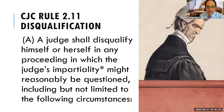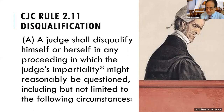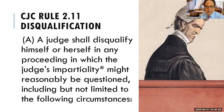Here's the first part of Section A: a judge shall disqualify himself or herself in any proceeding in which the judge's impartiality might reasonably be questioned, including but not limited to the following circumstances. The question is not whether the judge subjectively could be fair or subjectively is biased, but whether it would be reasonable for other people to question the judge's impartiality. So we have concern about even the appearance of impropriety or the appearance of bias, even for a judge who doesn't actually care.